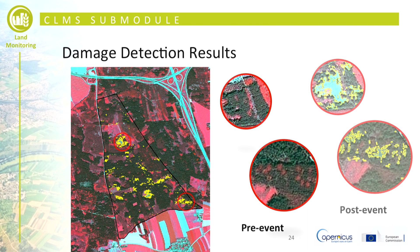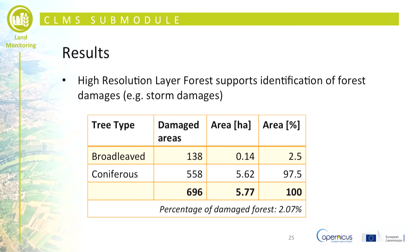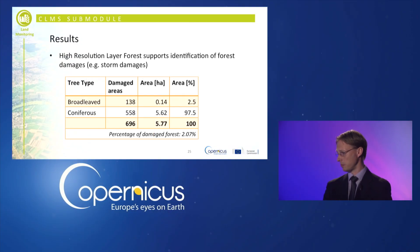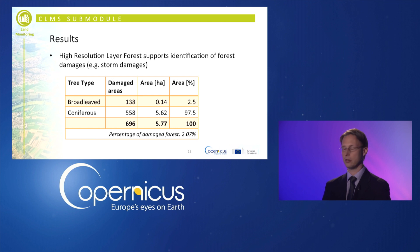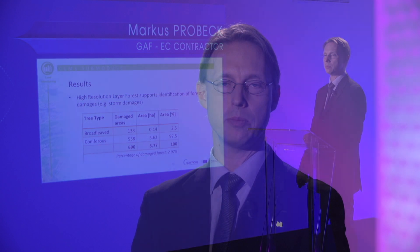Applying these steps produces a map showing exactly the detected damage areas, which can be extended to a larger area. The damage areas show fuzzy, irregular shapes — clearly dependent on wind direction, speed, and local conditions. As a summary for this concrete case, 5.7 hectares of damaged forest were found in that area, of which 97.5% were coniferous forest stands. This is not surprising, as coniferous forests have very shallow roots and are highly susceptible to storm and wind damage.